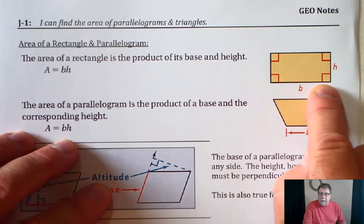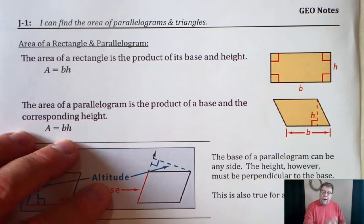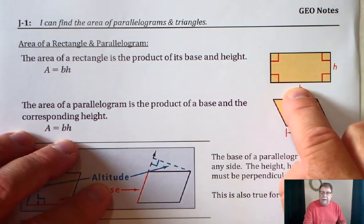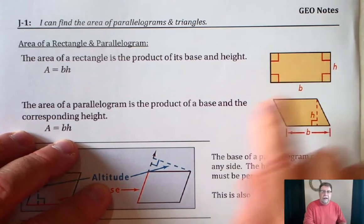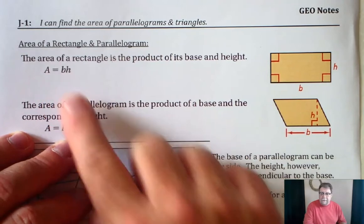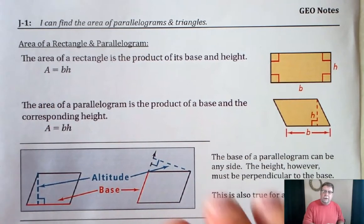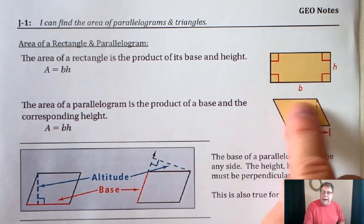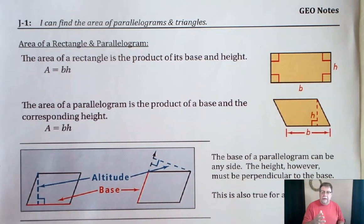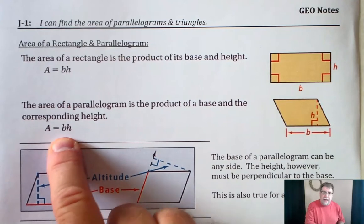So the bottom is going to be called the base. It doesn't have to be the bottom. The height is perpendicular to the base, and that's important. It's got to be perpendicular to the base. And so the area is just simply the base times the height. That's the area of the rectangle. So as we change the shape to a parallelogram, how does that change the formula? Well, it doesn't change it at all.